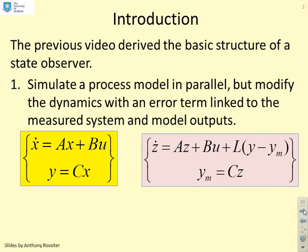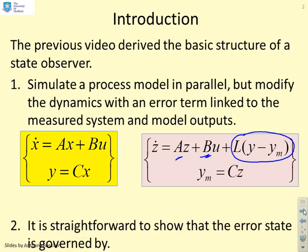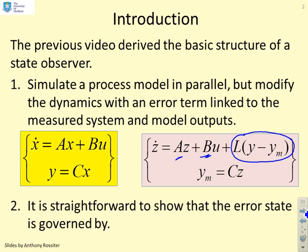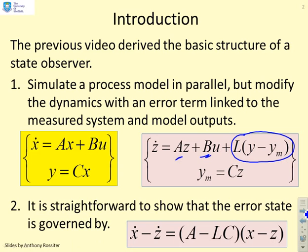then our observer system has the same A and B matrices, but we add this additional term L times the error between the measured output y and the model output ym. It was straightforward to show that if you simulate these two processes in parallel, the process and the observer, then you get these error dynamics. The error between the model state and the observer state is based on a state transition matrix A minus LC.